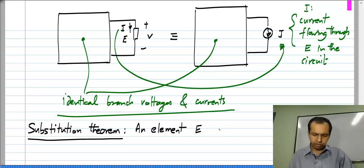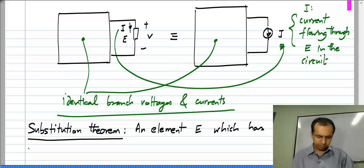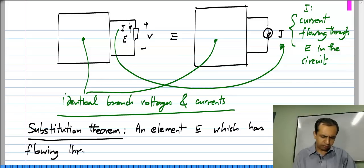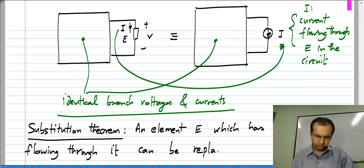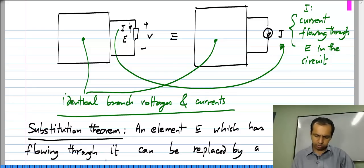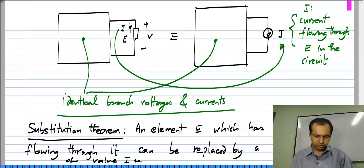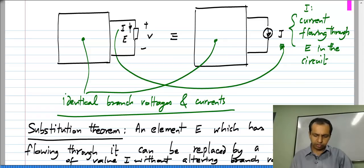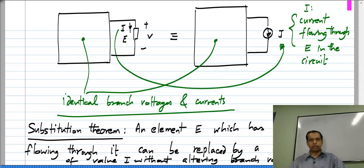An element E which has a current I flowing through it can be replaced by a current source of value I, without altering branch voltages and currents — basically without changing the circuit conditions. That is the substitution theorem. I will illustrate it with an example.